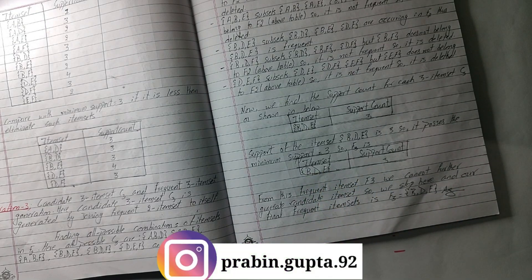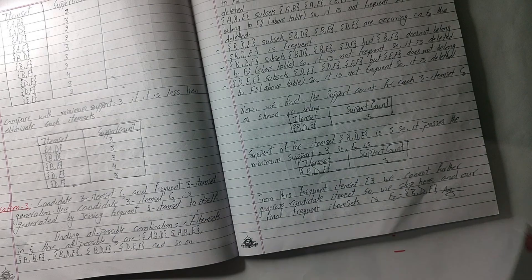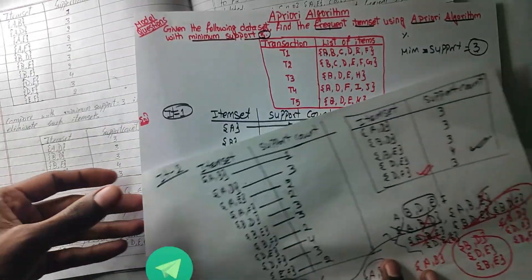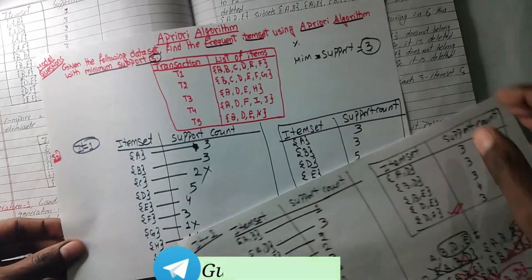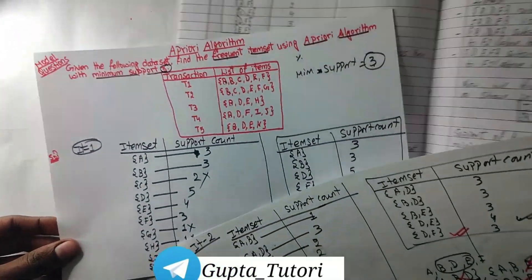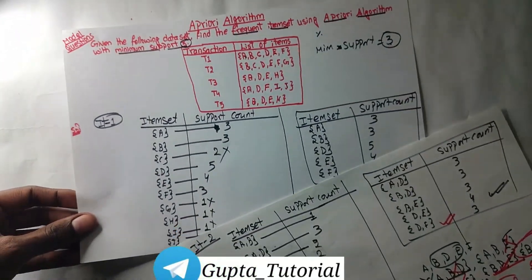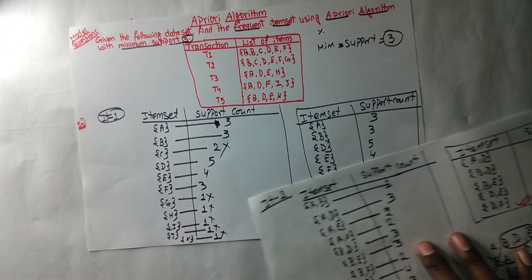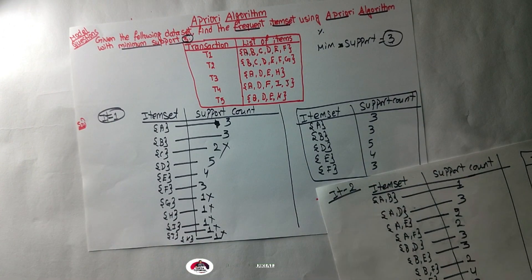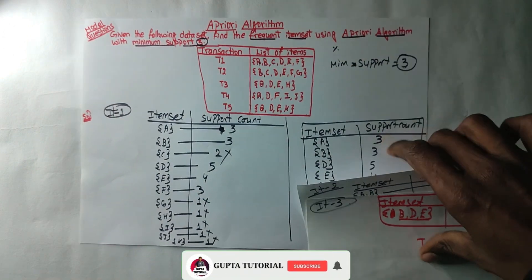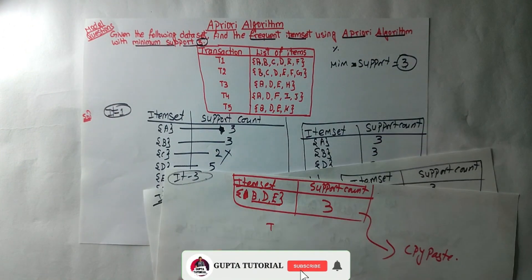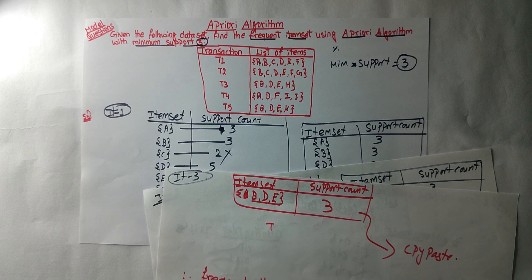From this frequent item set, we can't further generate a candidate item set. So we stop here. Our final frequent item set is BDE. If you have any questions about the model question, please subscribe to the channel. See you in the next video. Till then, have a good day.